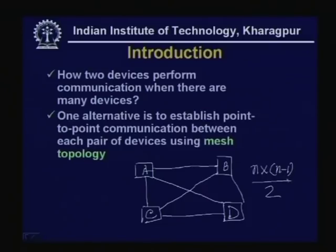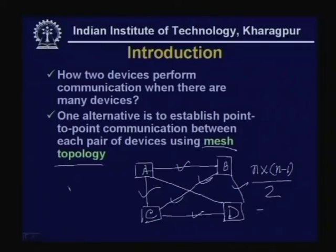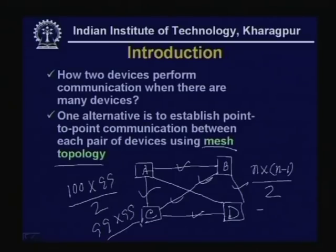That number is very large. For four stations you require 4×3/2 = 6 links — and indeed counting gives 1, 2, 3, 4, 5, 6. This is known as mesh topology, and obviously when you have a large number of stations this is not practical. For example, with 100 nodes you will require 100×99/2 — nearly 5000 links — to establish communication from any station to any station. So this is not a good choice. What is the alternative? One alternative is to use a switched communication network.